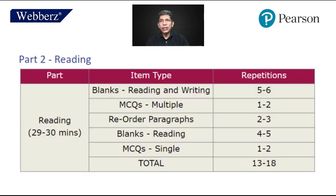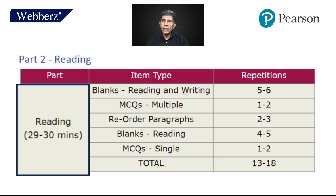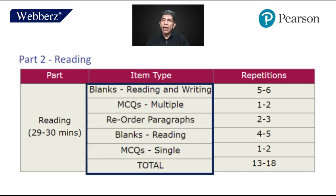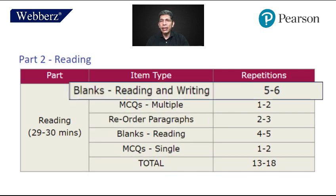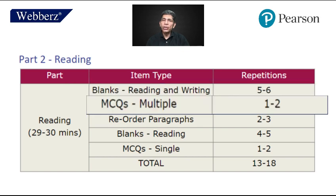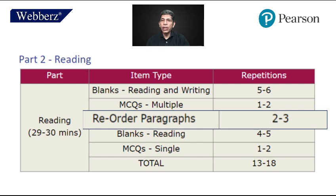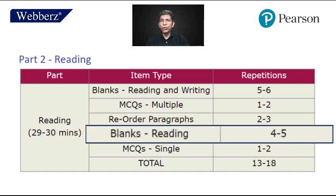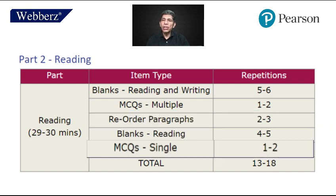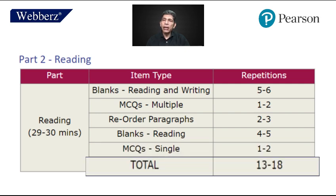Let's go to Part 2, that is reading. The total reading time will be 29 to 30 minutes. There are 5 item types. The first item type is reading and writing blanks — 5 to 6 repetitions. Multiple choice questions, multiple answers — 1 to 2. Reorder paragraphs — 2 to 3. Reading blanks — 4 to 5. Multiple choice questions, single answer — 1 to 2. The total number of questions given will be 13 to 18.